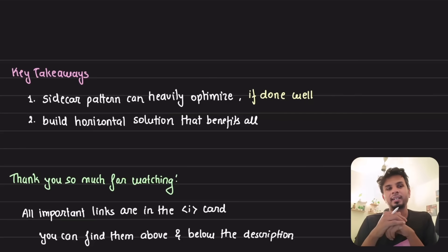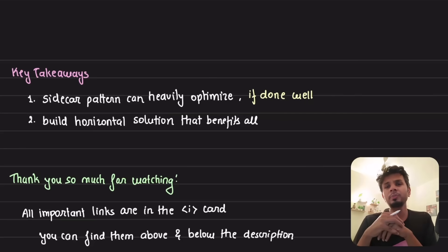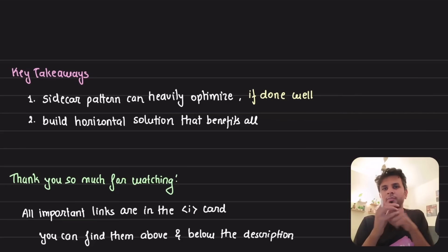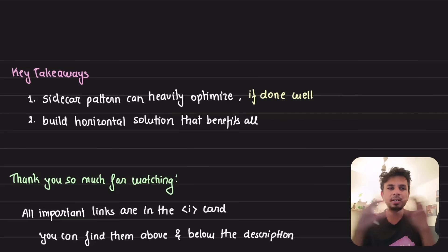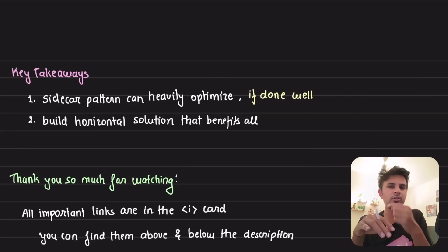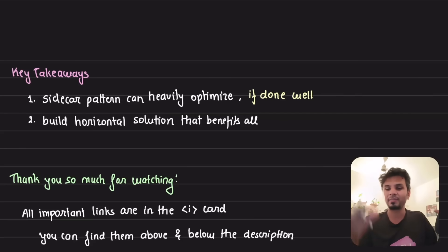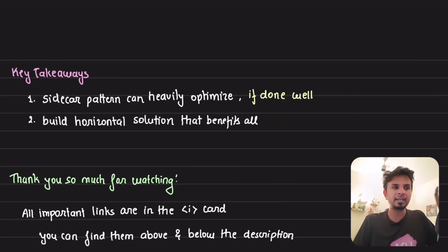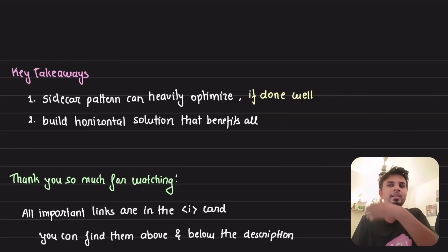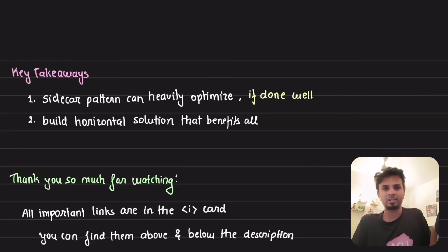Second key takeaway: when developing a solution for one of your customers, try to see if you can build a horizontal solution that benefits all. Implement your solution once and it benefits the entire ecosystem — just like the TCS team did: instead of educating one team to follow best practices and write a doc, they built a sidecar that every single one of their customers can use. That's a horizontal solution.